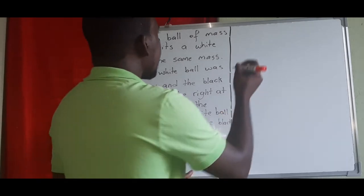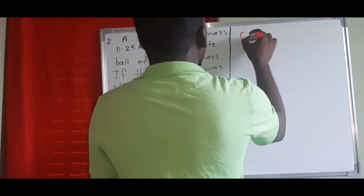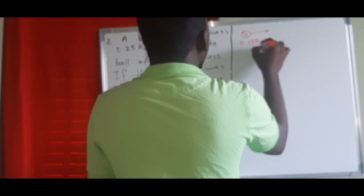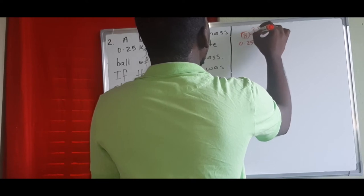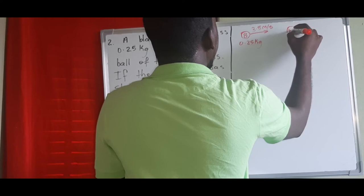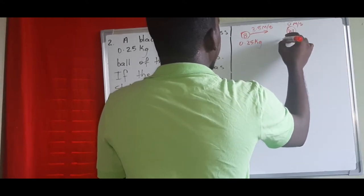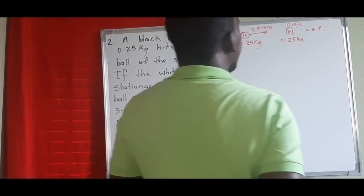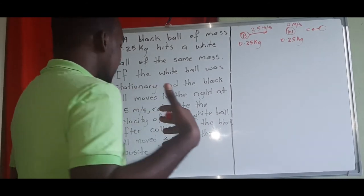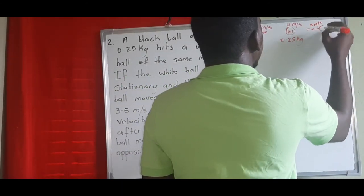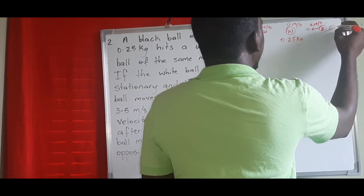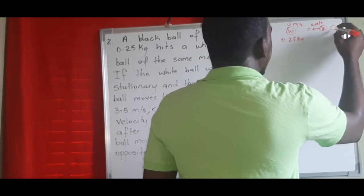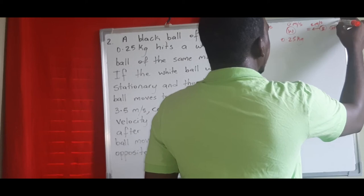Let's draw the diagram. The black ball, mass 0.25 kilograms, moves to the right at 3.5 meters per second. It hits the white ball, which is stationary at 0 meters per second and has the same mass. After the collision, the black ball moves in the opposite direction — to the left — at 2 meters per second. We assume the white ball moves to the right, and we need to find its velocity v.